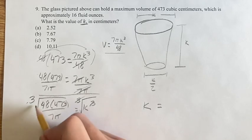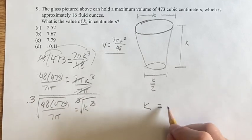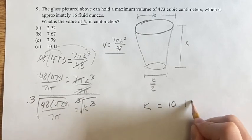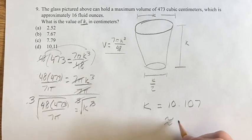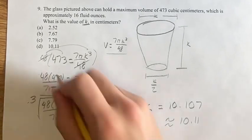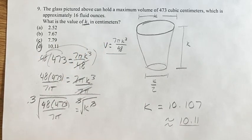And this, you plug into your calculator, and you get 10.107. Or rounding to the nearest hundredth, just like they did, it'd be 10.11, which means d is going to be your final answer. k in centimeters is 10.11. As always, thank you for liking and subscribing, and I'll see you in the next video.